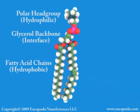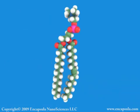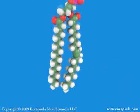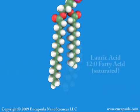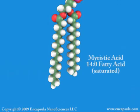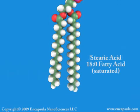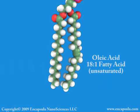Phospholipids are known as polar lipids because the phosphorylated portion is polar or water-soluble, while the fatty acid tails of the molecules are nonpolar or fat-soluble. Fatty acids are referred to as saturated when the carbons in the chain are covalently bonded to each other by a single bond and each carbon in the chain has the maximum number of hydrogen atoms covalently bonded to it — in other words, the carbon chain is saturated with hydrogen atoms.